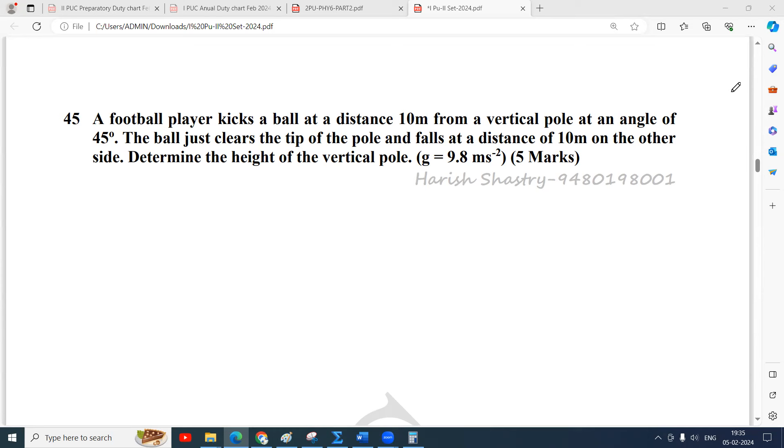Namaste everyone. Here is a problem. A football player kicks a ball at a distance of 10 meters from a vertical pole at an angle of 45 degrees. The ball just clears the tip of the pole and falls at a distance of 10 meters on the other side. Determine the height of the vertical pole.